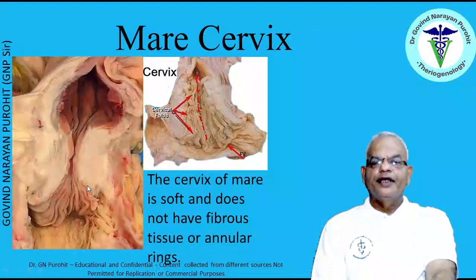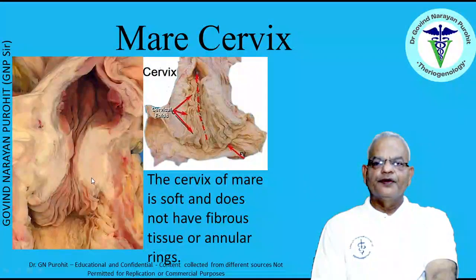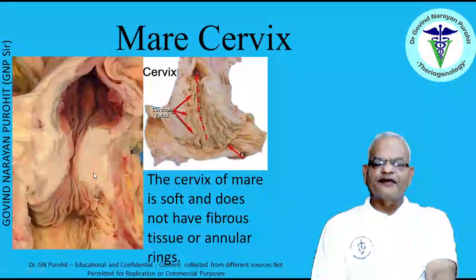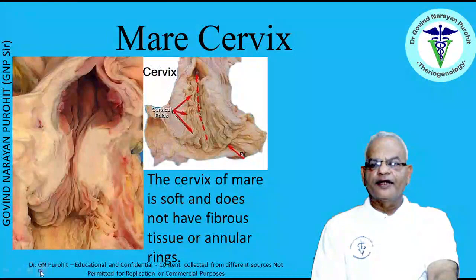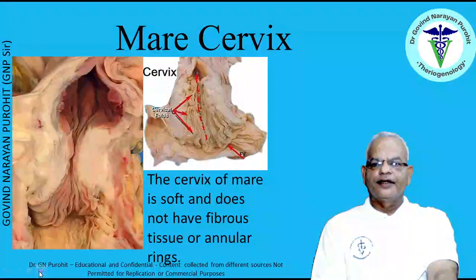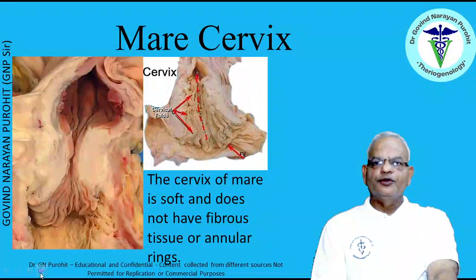The mare cervix is very soft and friable — one can dilate it with a finger. It does not have fibrous tissue or cervical annular rings. The mare cervix is also difficult to locate by transrectal palpation because of its soft nature, making it difficult for a palpating veterinarian to identify it.